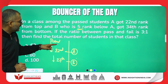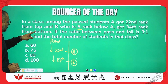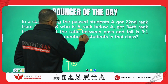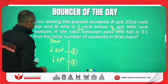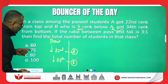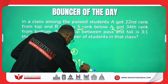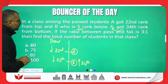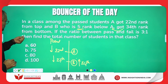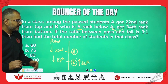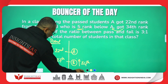B got 34th rank from the bottom. Five ranks below A, and B has got 34th rank from the bottom. So his position from the bottom is 34th. If the ratio between pass and fail candidates is 3:1, then find the total number of students in that class. This is the list of past candidates.